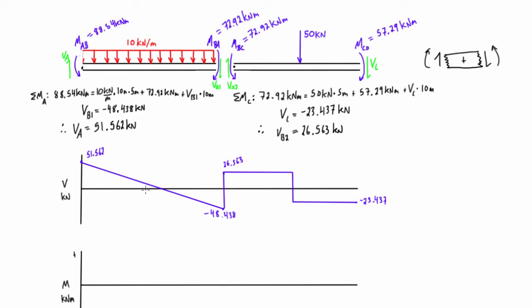We want to find the distance to the zero-shear point, which will be helpful for the bending moment diagram. Using similar triangles: the total change is 100 over a distance of 10, so the rate is 10 per meter. For the smaller nested triangle with a value of 51.562, dividing by 10 gives x = 5.1562 meters. That makes the remaining distance 4.8438 meters. The second span is split 5 and 5 from earlier in the problem.